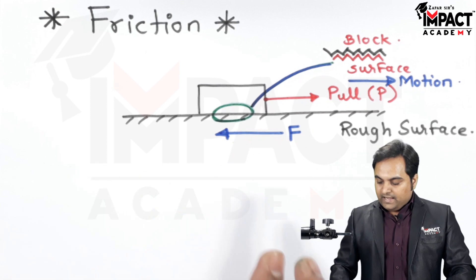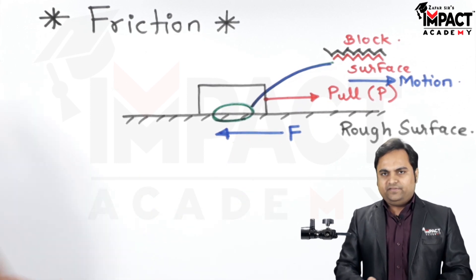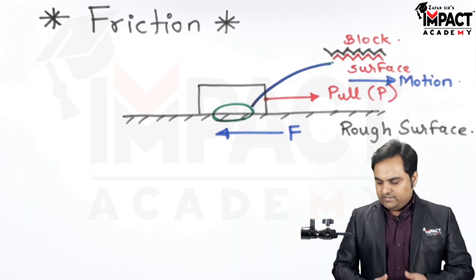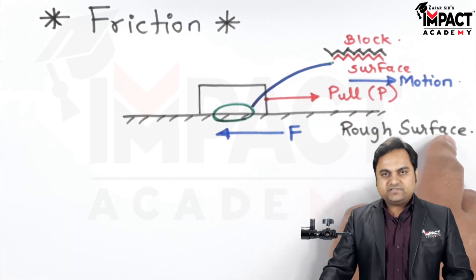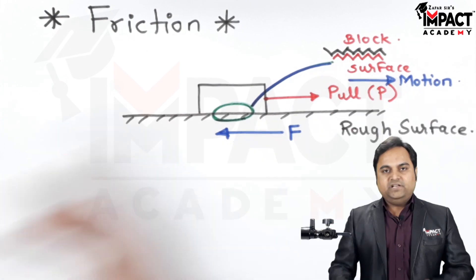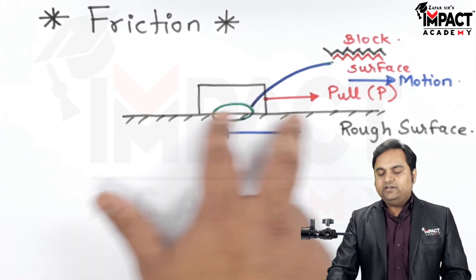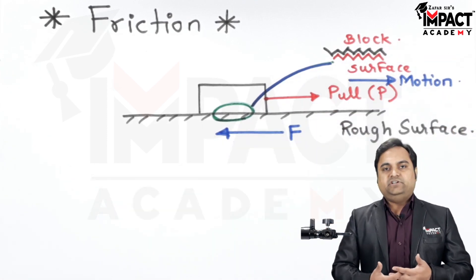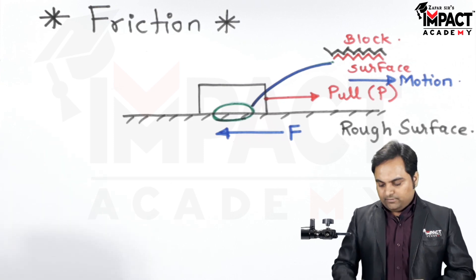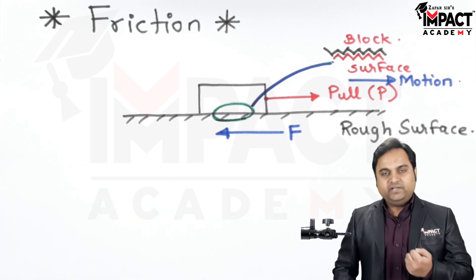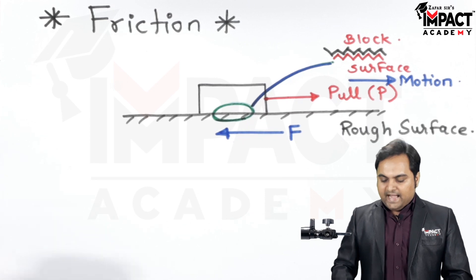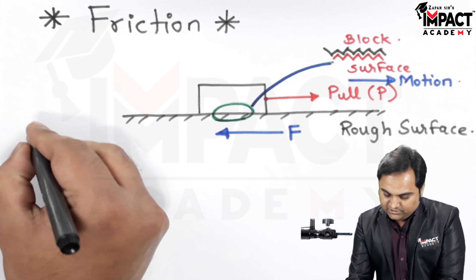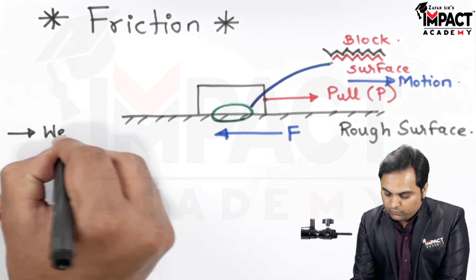In summary we can say that friction is the interlocking between the block and the surface. If the surface is smooth then there would be less amount of interlocking and the block can slide freely, but if the surface is rough there would be more amount of interlocking and the block is going to experience more amount of friction. There are some cases in which friction is desired.